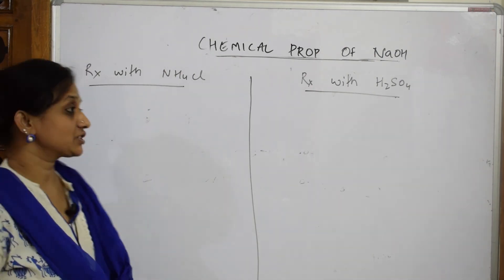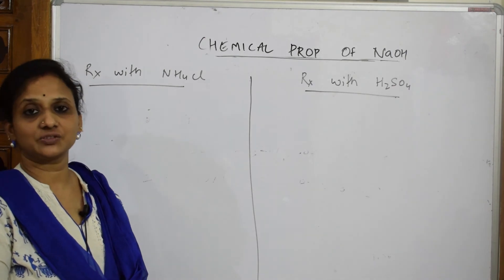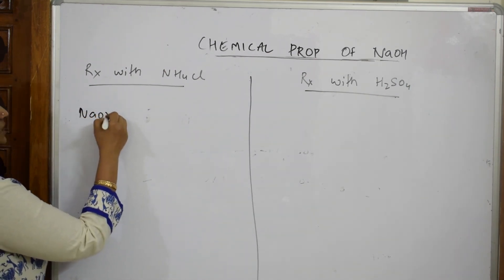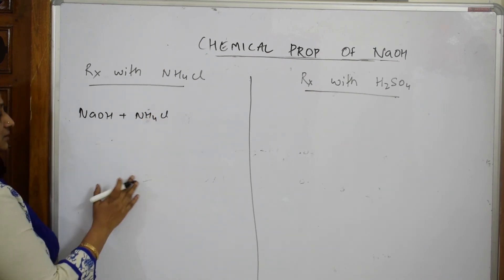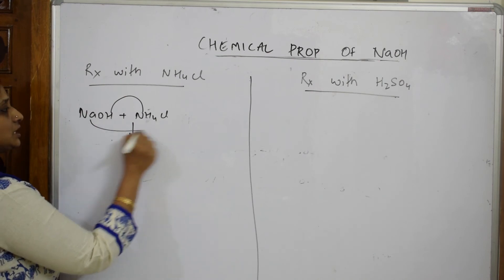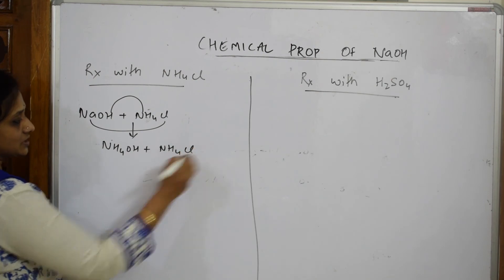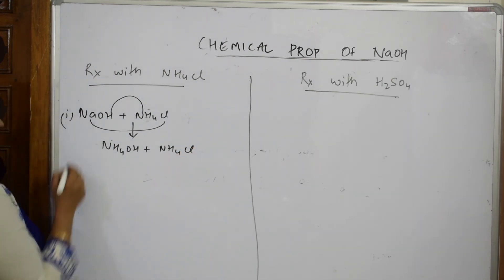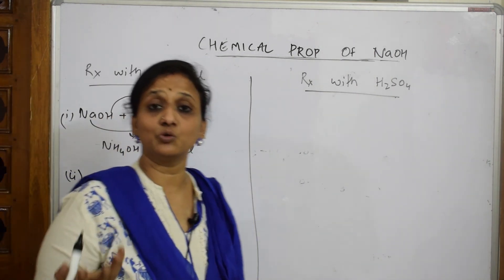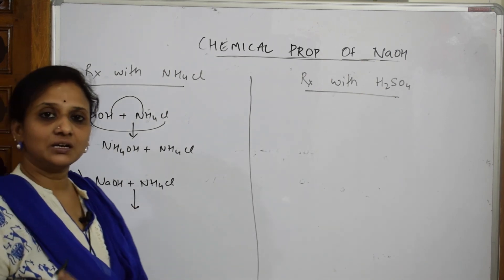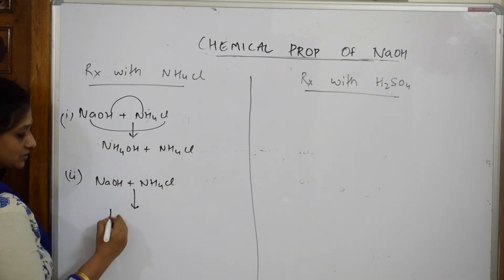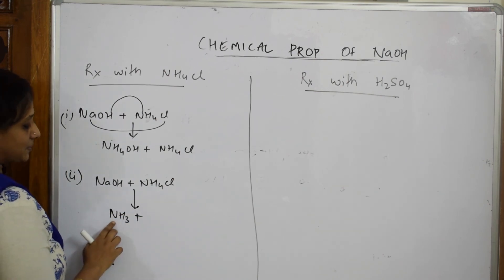Now let's see the reaction with ammonium chloride and sulfuric acid. When sodium hydroxide reacts with ammonium chloride, there are two ways to form products. First, by double displacement reaction, ammonium hydroxide is formed. Second, sodium hydroxide also combines with ammonium chloride to release ammonia — a pungent-smelling gas — along with NaCl and water.